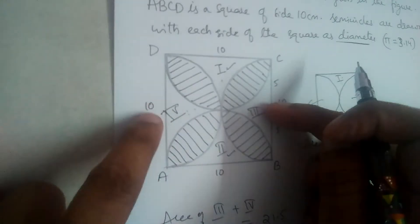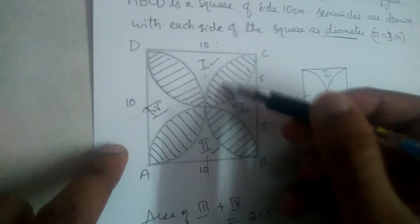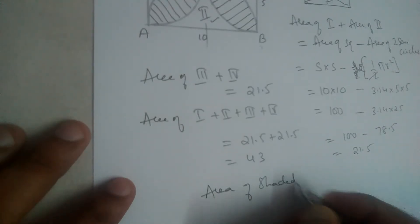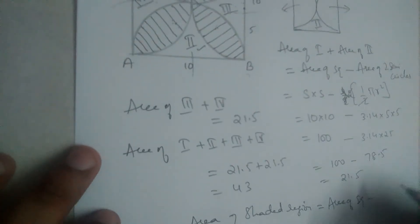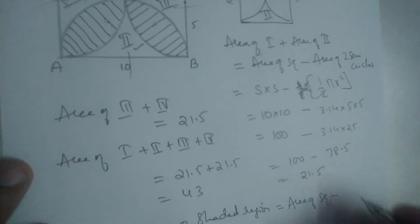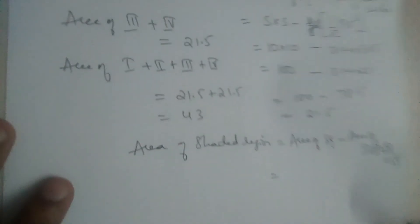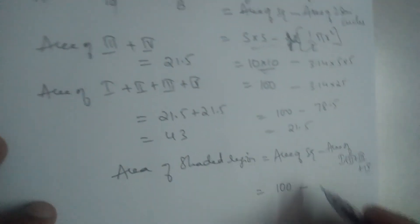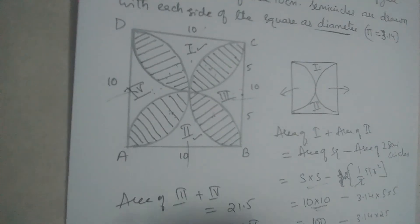Now, to find the area of the shaded region: from the square, if we subtract the four unshaded regions 1, 2, 3, and 4, we get the area of the four shaded leaves. So area of shaded region equals area of square minus area of regions 1, 2, 3, and 4, which is 100 minus 43. The area of the shaded region is 57.5 centimeters squared.